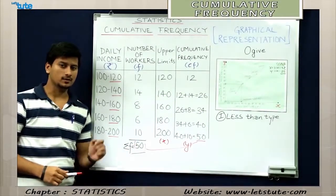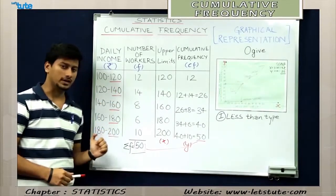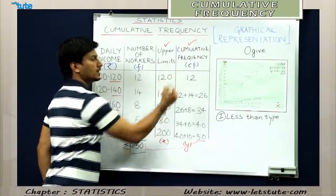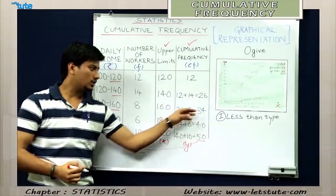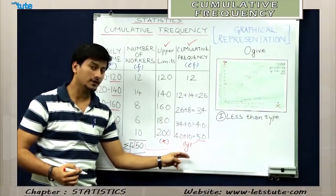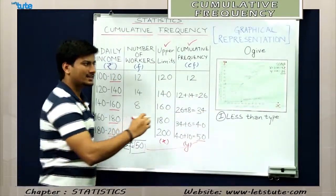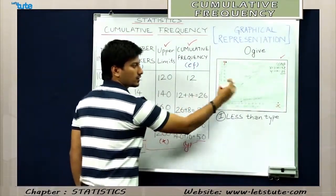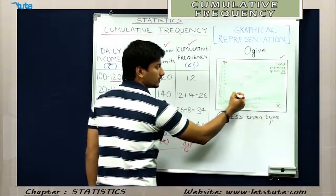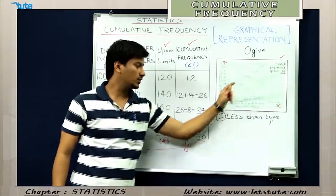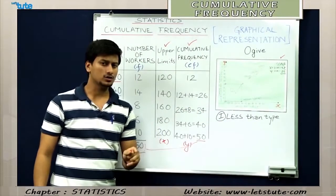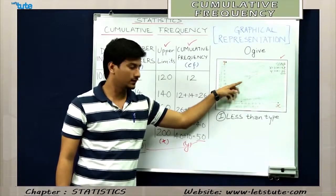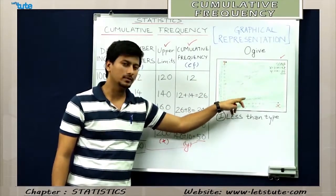Let's quickly summarize the less than type method. First, identify the upper limits from your data. Second, calculate the cumulative frequencies. Third, mark the upper limits on the x-axis and cumulative frequency on the y-axis. Then set the scales for your graph and plot the points. Form a freehand smooth curve — this resultant curve is the less than type ogive. To find the median of grouped data, use n by 2, locate that value on the y-axis, touch the curve, then drop to the x-axis.